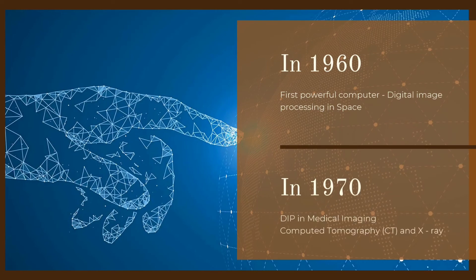In 1960, the first powerful computer was used by the Jet Propulsion Laboratory for applying digital image processing techniques in space. This time period is said to be the birth time of digital image processing. In the 1970s, the application of image processing extended to medical imaging. The invention of computed tomography in 1970 uses digital image processing techniques for medical diagnosis.